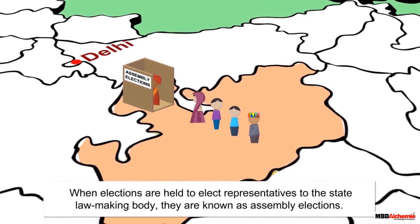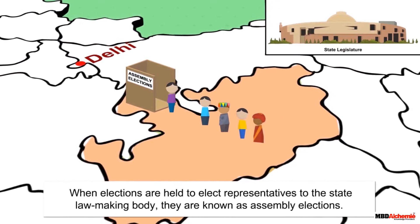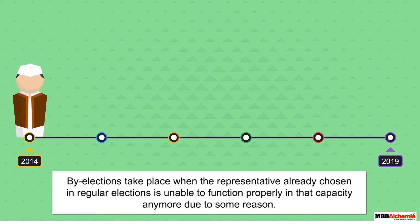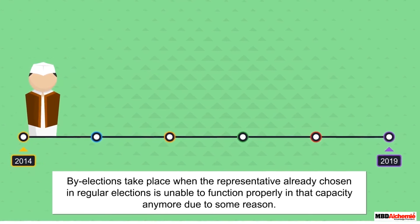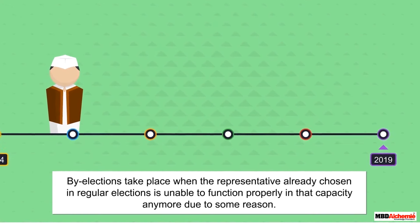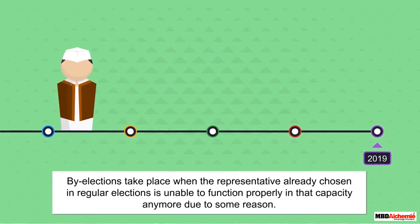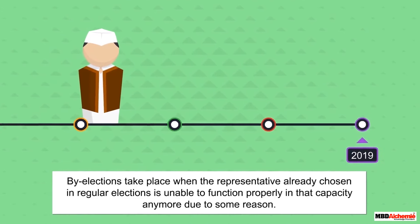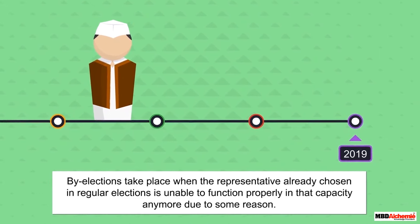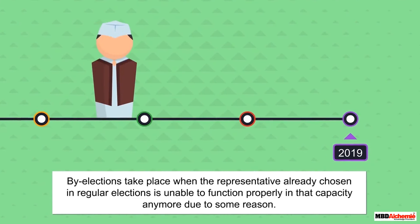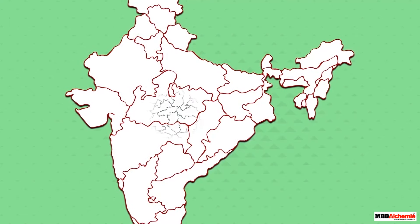When elections are held to elect representatives to the state lawmaking body, they are known as assembly elections. Sometimes by-elections are held between two regular elections in order to select a new representative. By-elections take place when the representative already chosen in regular elections is unable to function properly in that capacity anymore due to some reason.